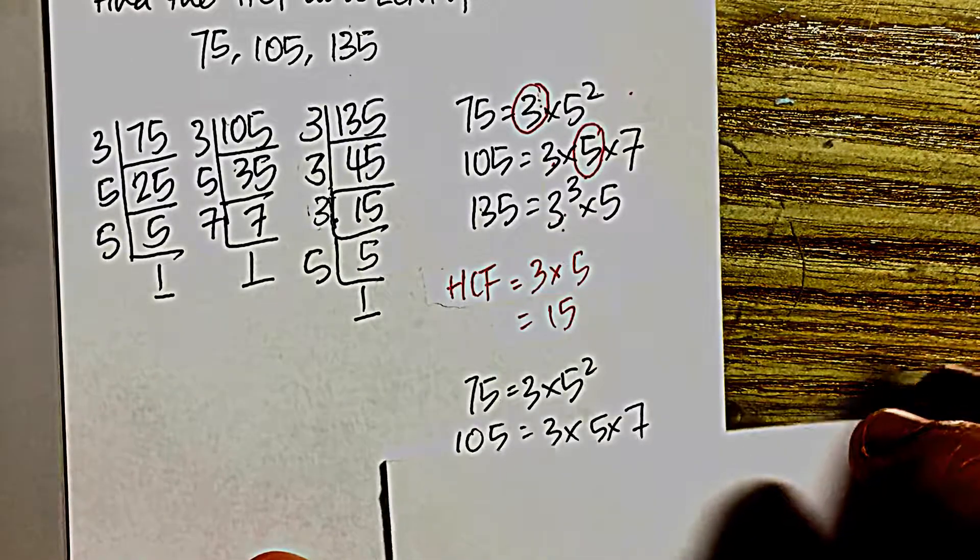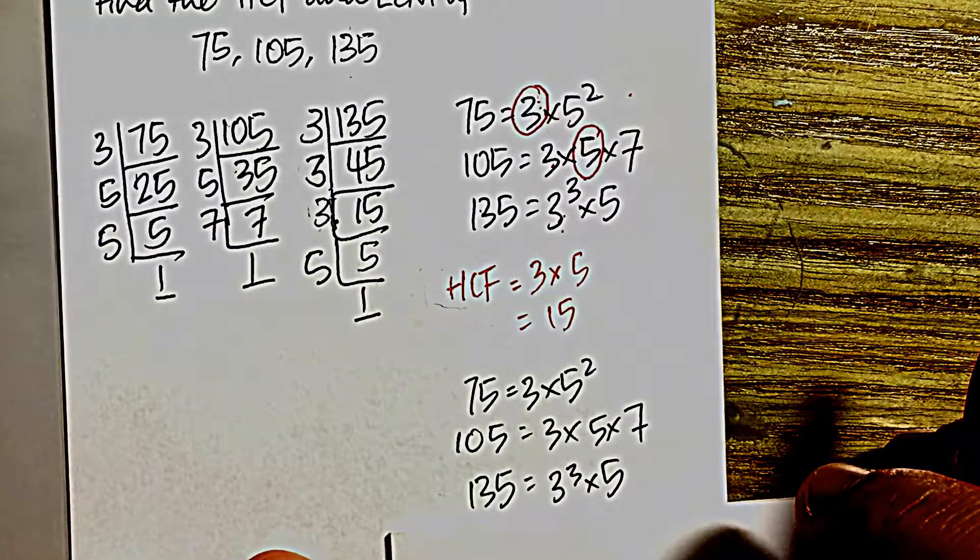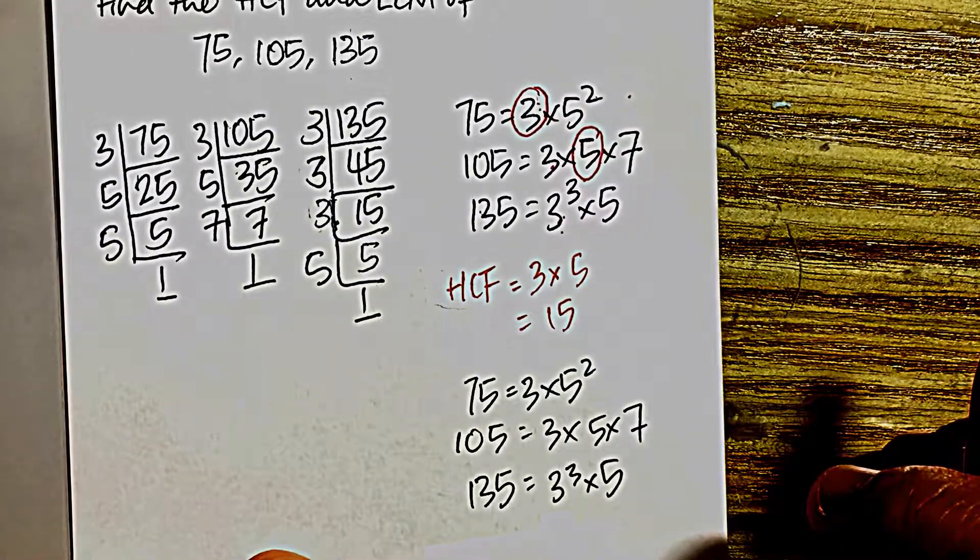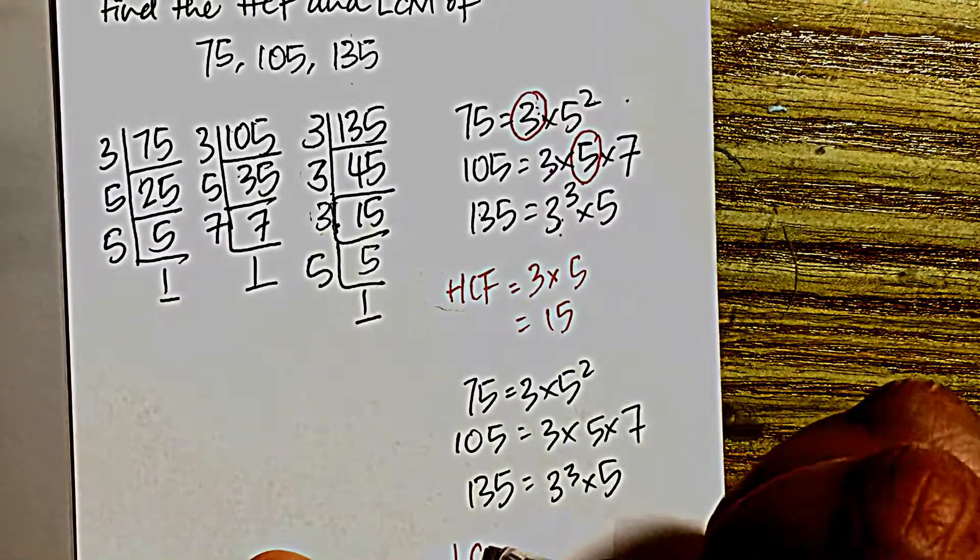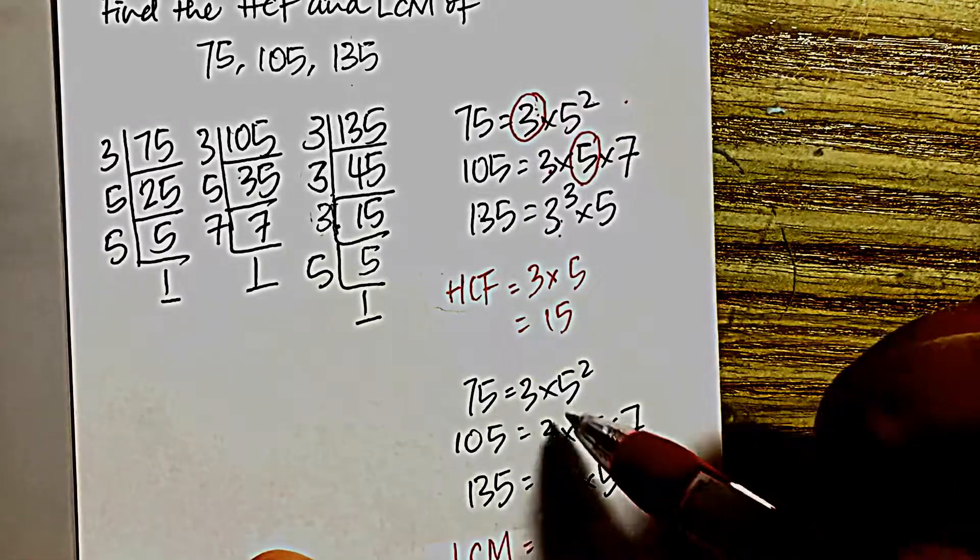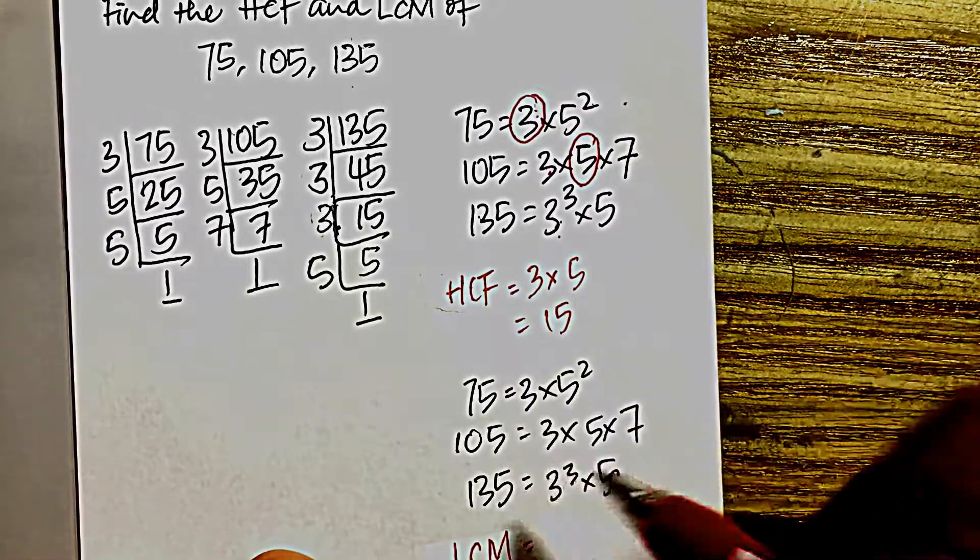Next, for LCM, lowest common multiple, the more factors the merrier. But since we want the lowest common multiple, we pick the factor with the highest power.